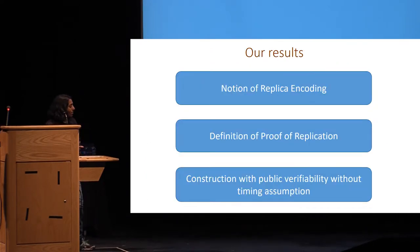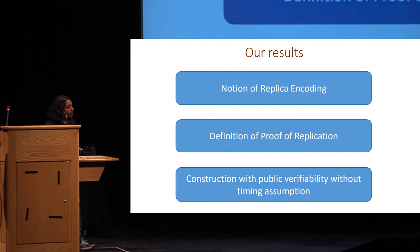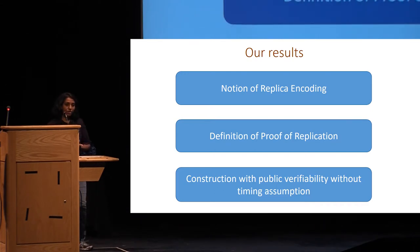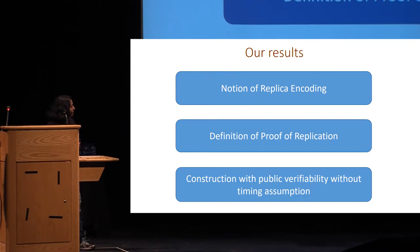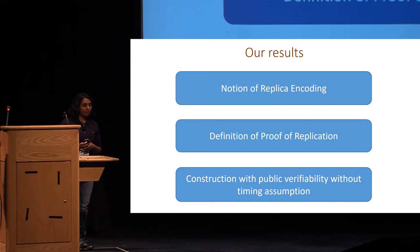In this work, we introduce a notion of replica encoding and use this notion to give a definition of proof of replication that does not rely on timing assumptions, and then give a construction that allows for public verifiability without timing assumptions.